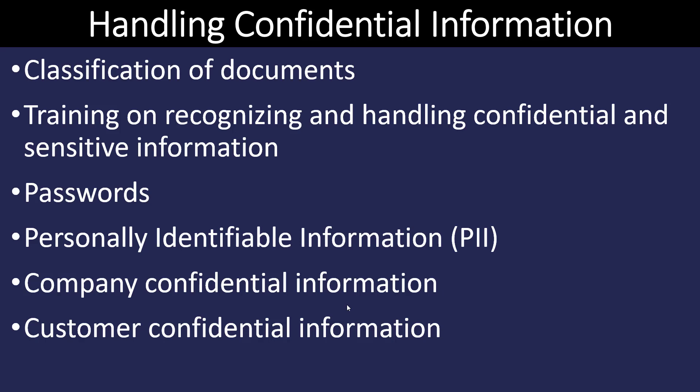Companies have to have a policy and procedure for handling confidential information. The first step is that someone has to classify the documents at the company. Once an organization has set up the policy for what is sensitive and what is not, the owner or creator of the document is responsible for classifying it. We have to have training so employees recognize and know how to handle confidential information — for example, a document with personally identifiable information may need to be stored in a separate location.